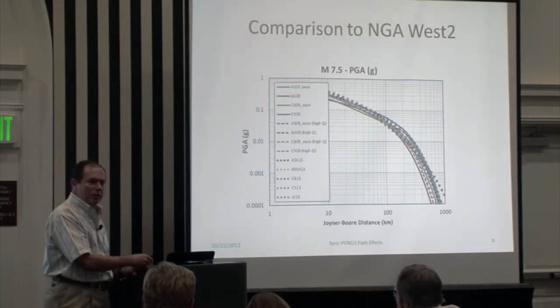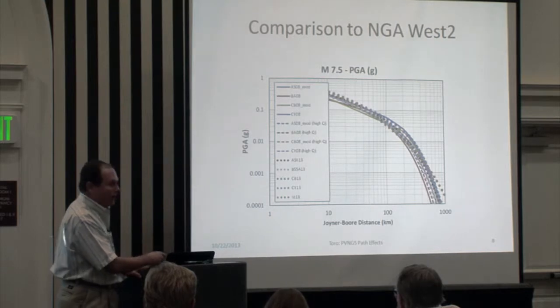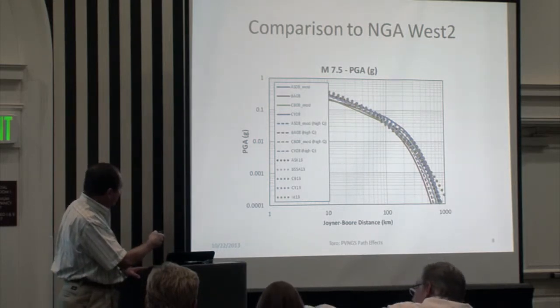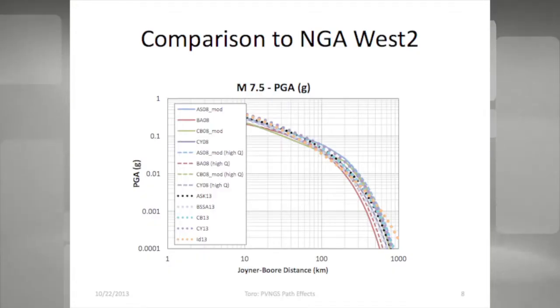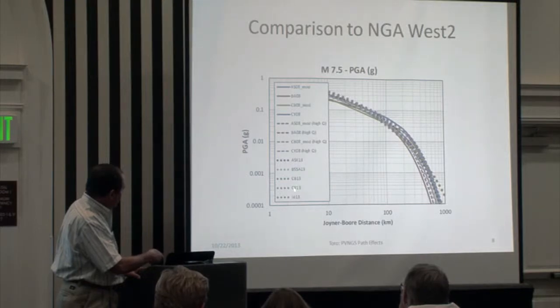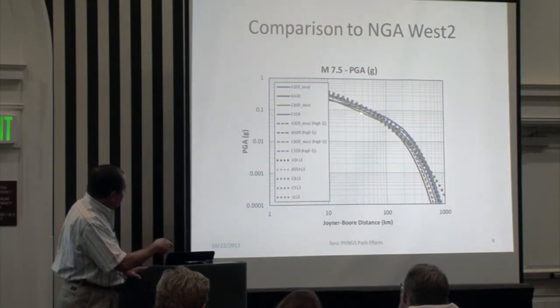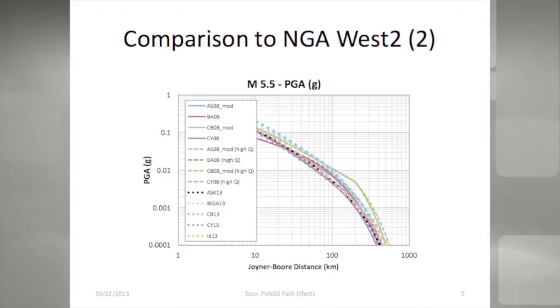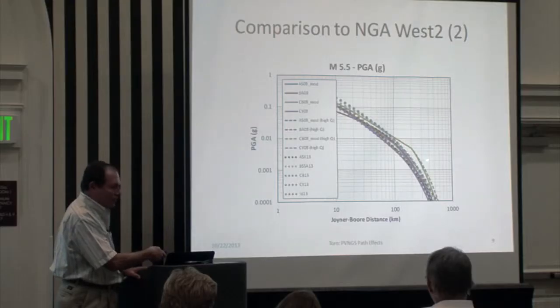We did that for all frequencies and considered all eight models in the hazard calculations. The next question was how do they compare to NGA West 2. Here are results for magnitude 7.5 PGA — remarkable, they match very nicely. NGA West 2 has five more models: ASK, BSSA, CB, CY, and Idriss, shown as dots. In general, you see that the dots superimpose nicely with what we had before. For magnitude 5.5, not very important at this distance but plotted anyway — in most situations you match well, with sometimes one stray model slightly higher but generally a fairly good match.